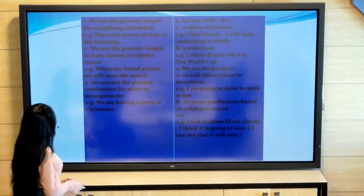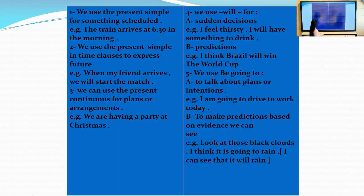Number one: we use the present simple for something scheduled. We can use simple present or present simple to express something in the future when it is scheduled. For example, the train arrives at half past six in the morning. We have 'arrives' in the simple present, but this sentence expresses something in the future.